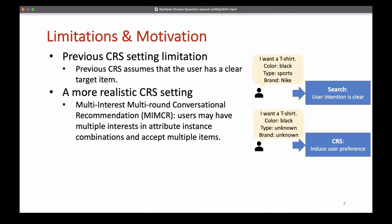Previous studies set up a user simulator to simulate the system user conversation. Previous CRS user simulator assumes that the user has a clear target item. The user accepts attributes associated with the item and rejects others. However, this assumption deviates from the real scenario. If the user has a clear target item, he would resort to search system, not CRS.